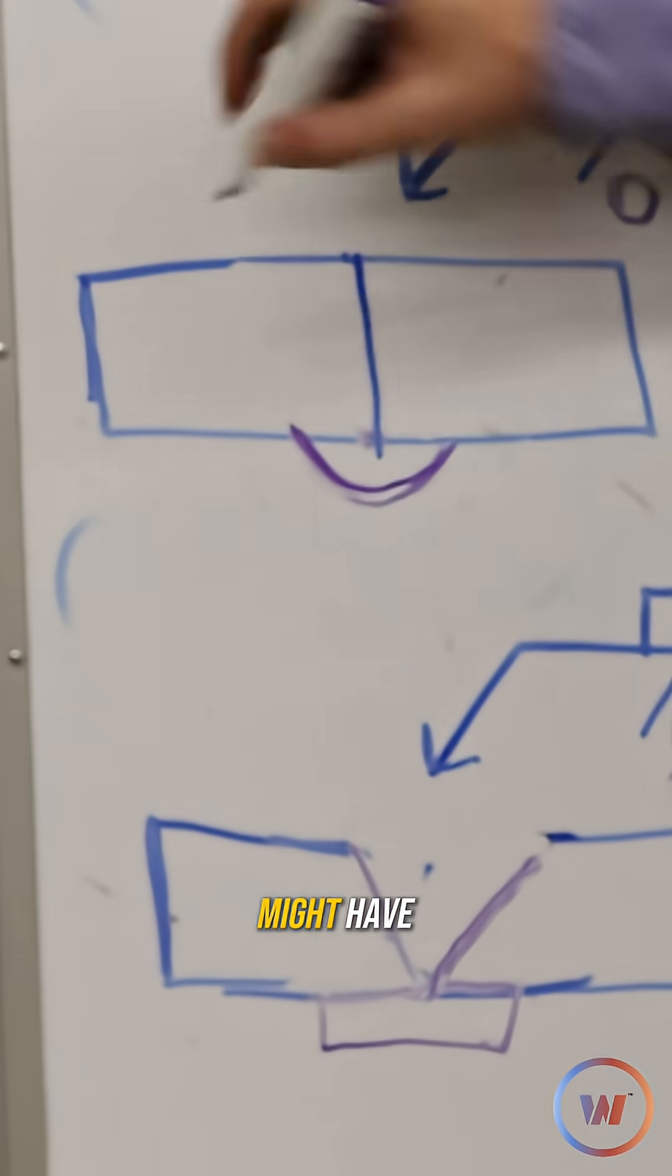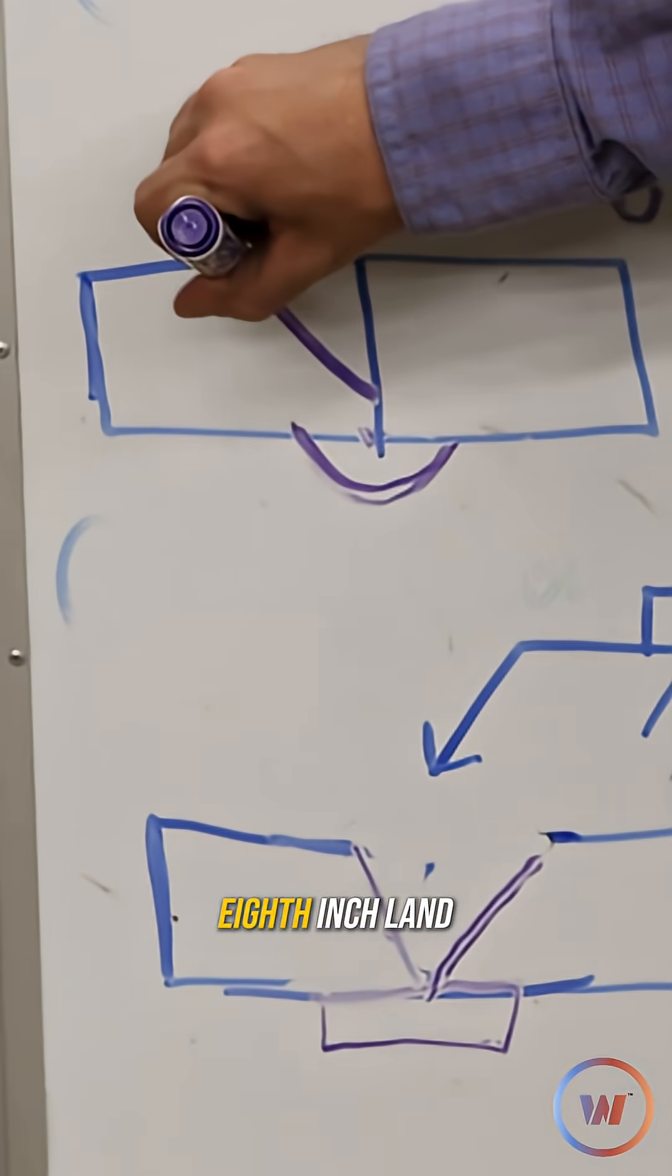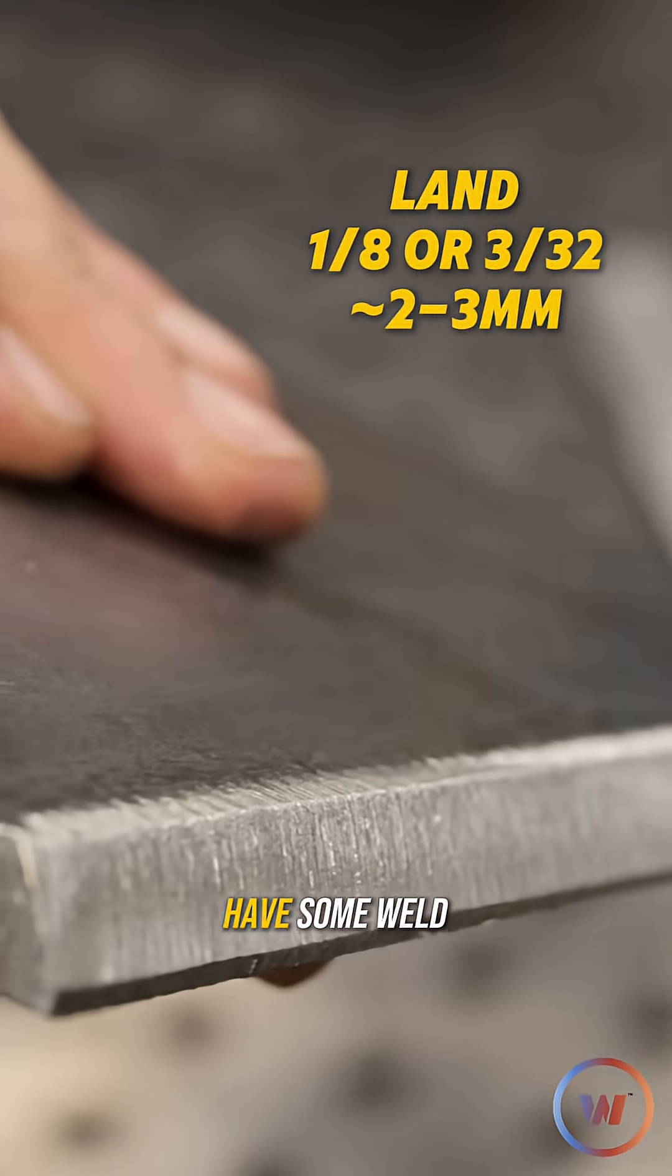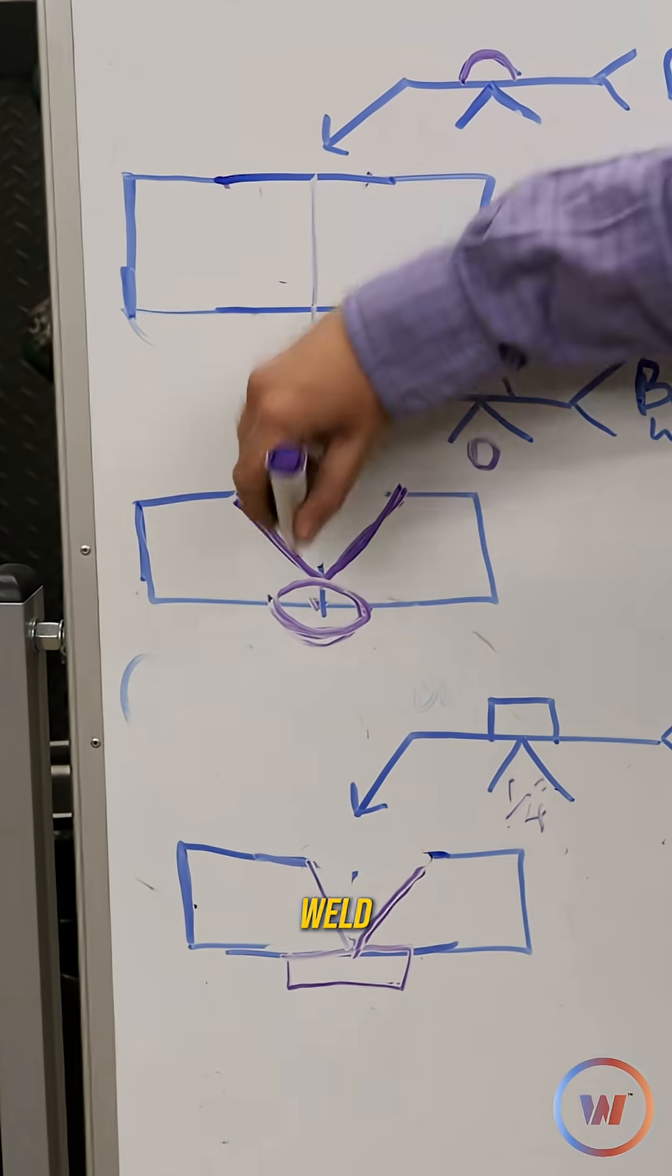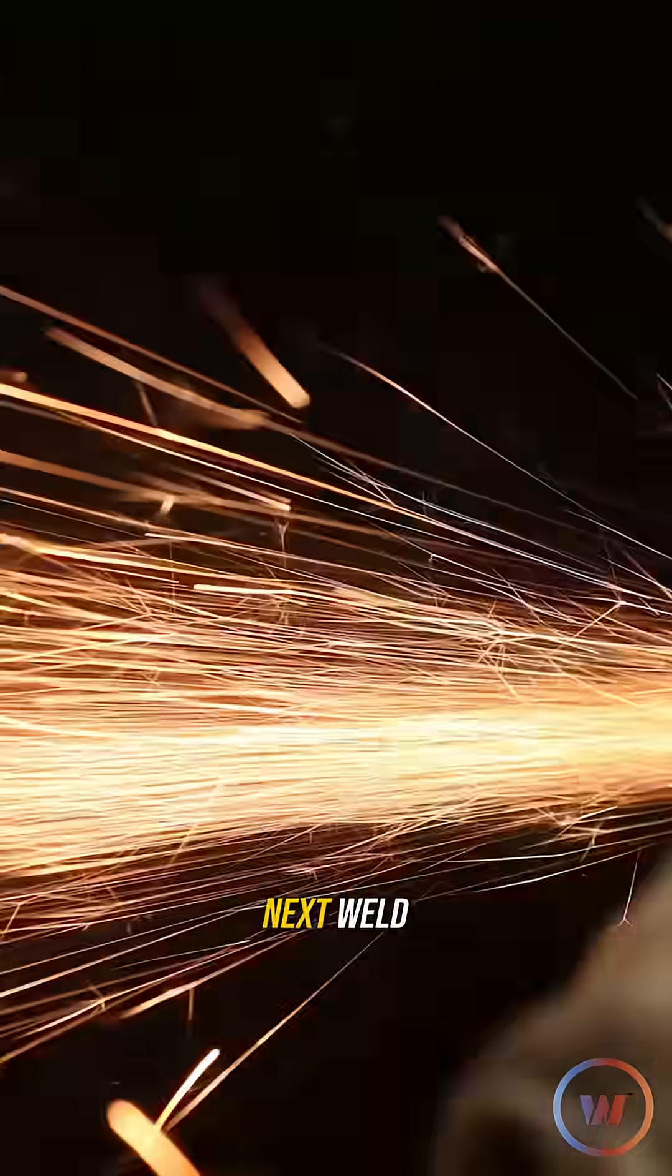In a lot of cases you might have not necessarily all the way prepped on your bevels but you might have like a 1/8 inch land. We put about a 1/8 inch or 3/32 land on here so that we have some weld to put on for our back weld and then again we can grind into that so that we can put our next weld.